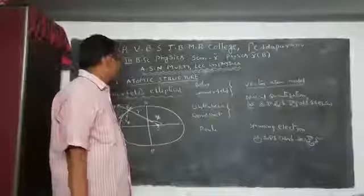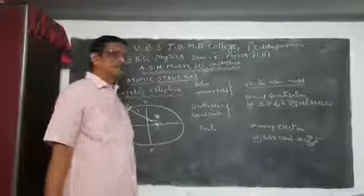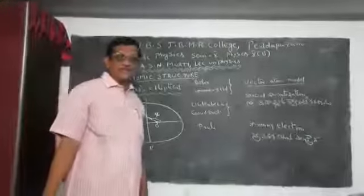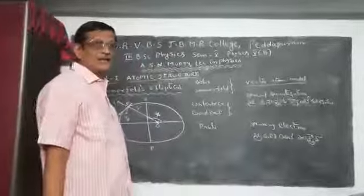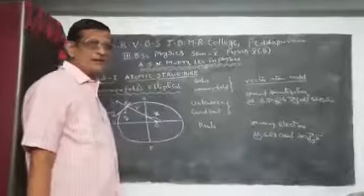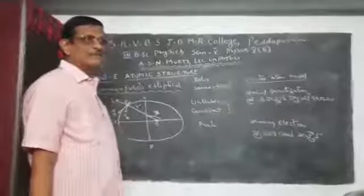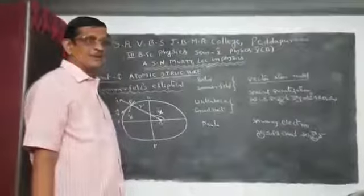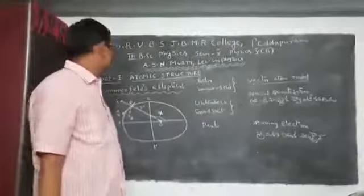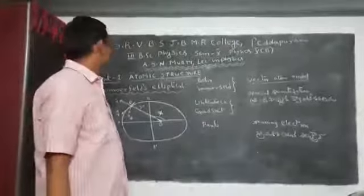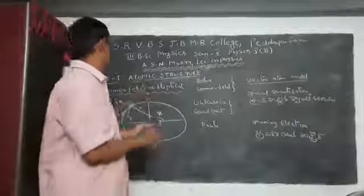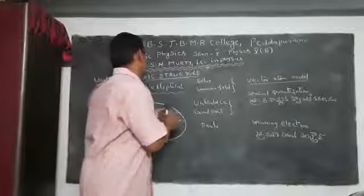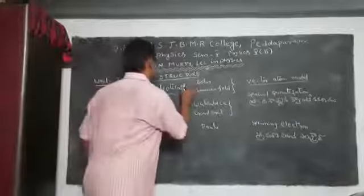Dear students, last class we discussed about Hansen's model, Rutherford's model, Bohr's model and drawbacks in both theory. Now we are discussing about Sommerfeld's elliptical orbits.